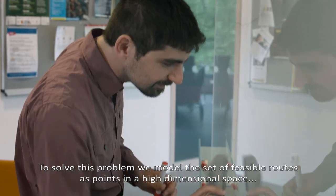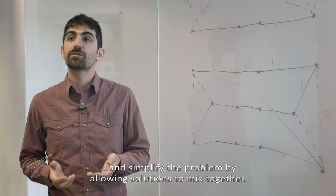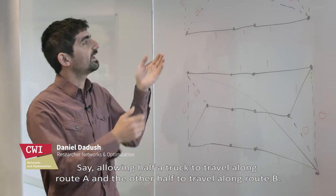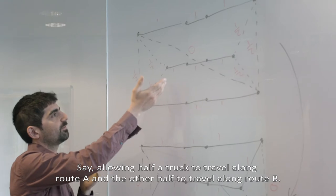To solve this problem, we model the set of feasible routes as points in a high dimensional space and simplify the problem by allowing solutions to mix together. Say, allowing half a truck to travel along route A and the other half to travel along route B.